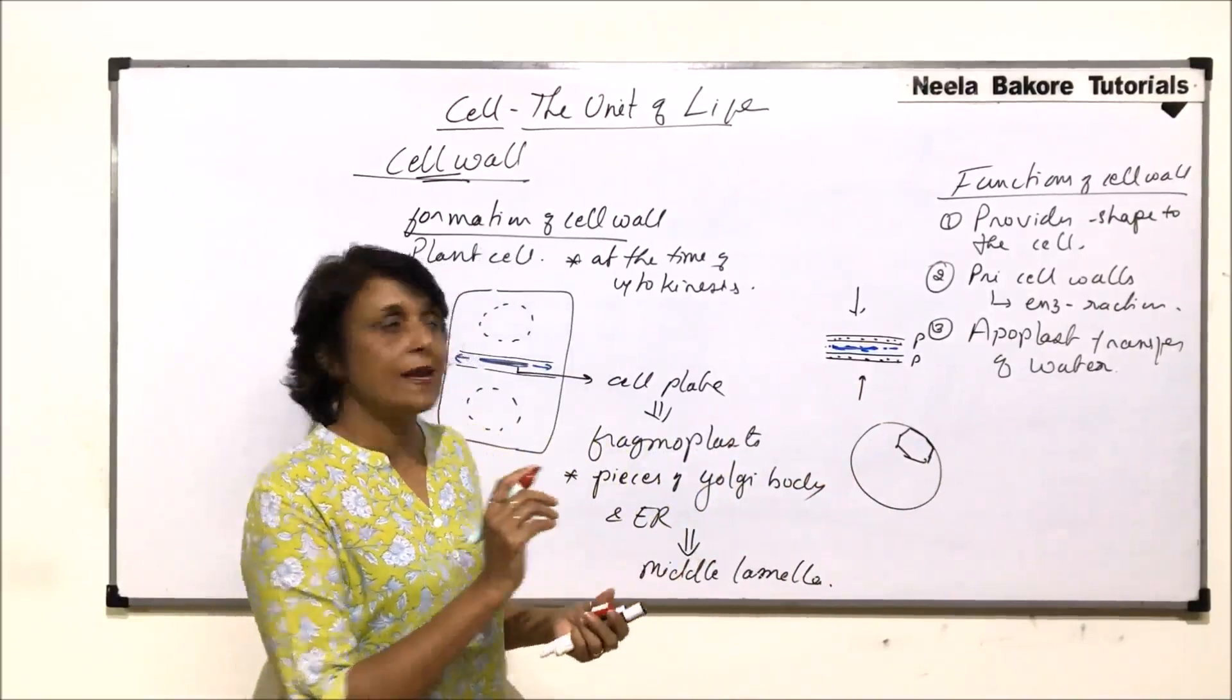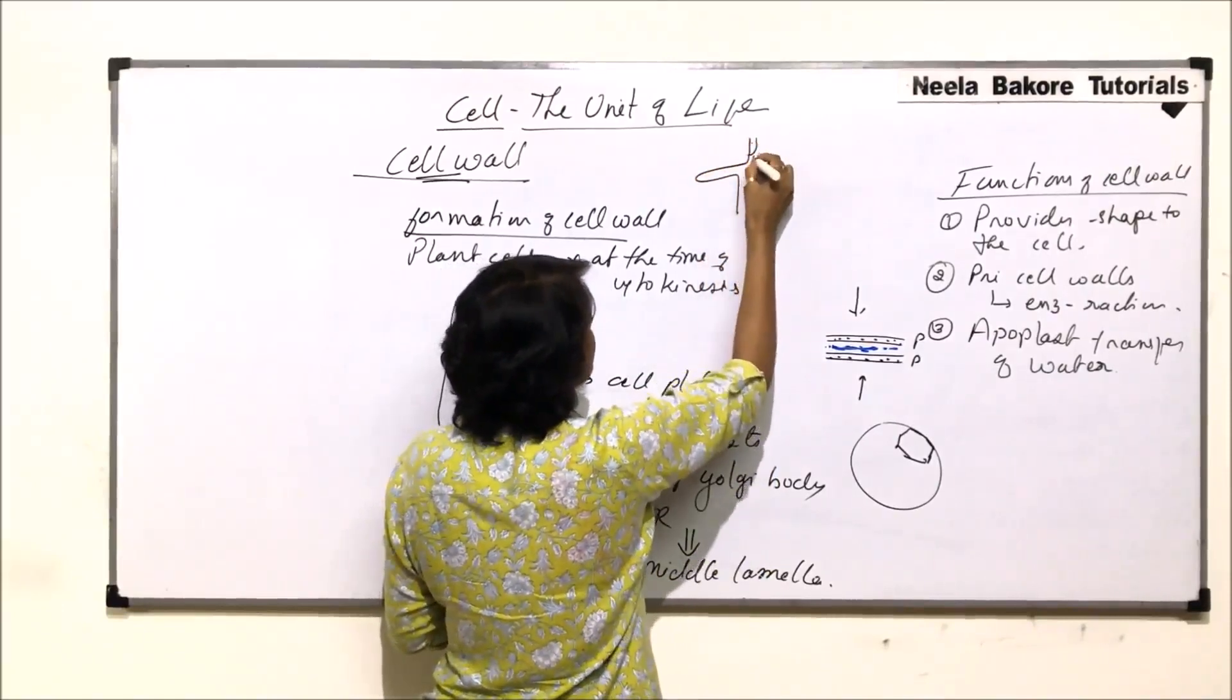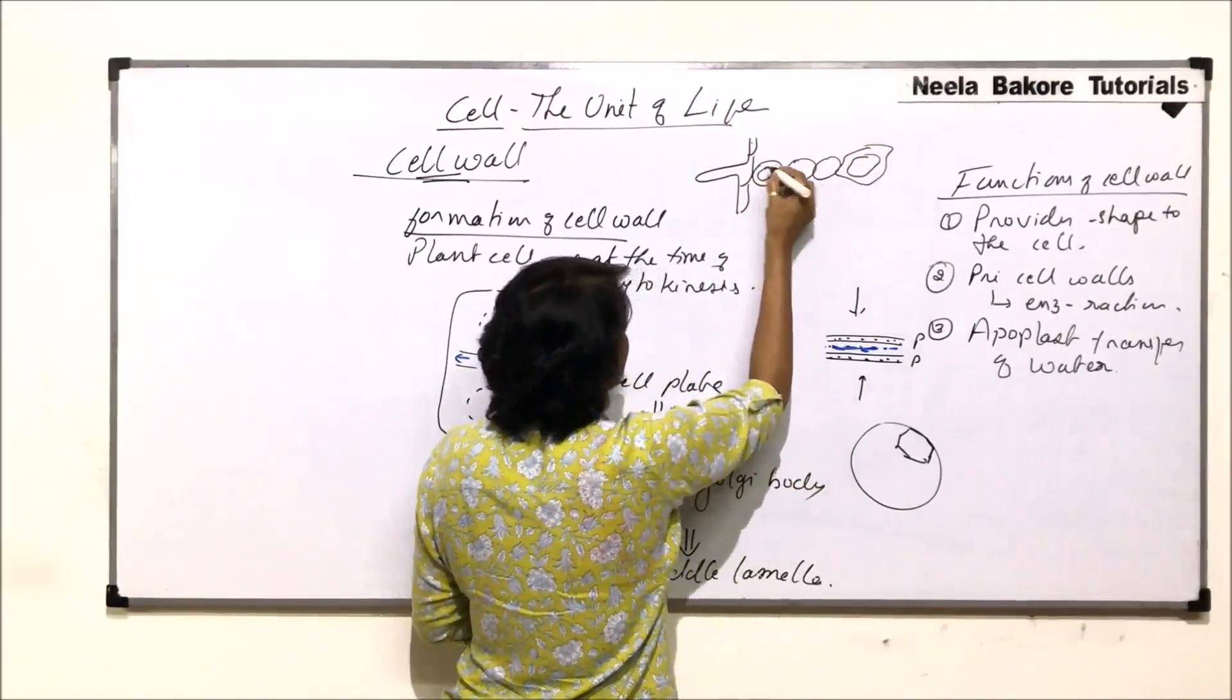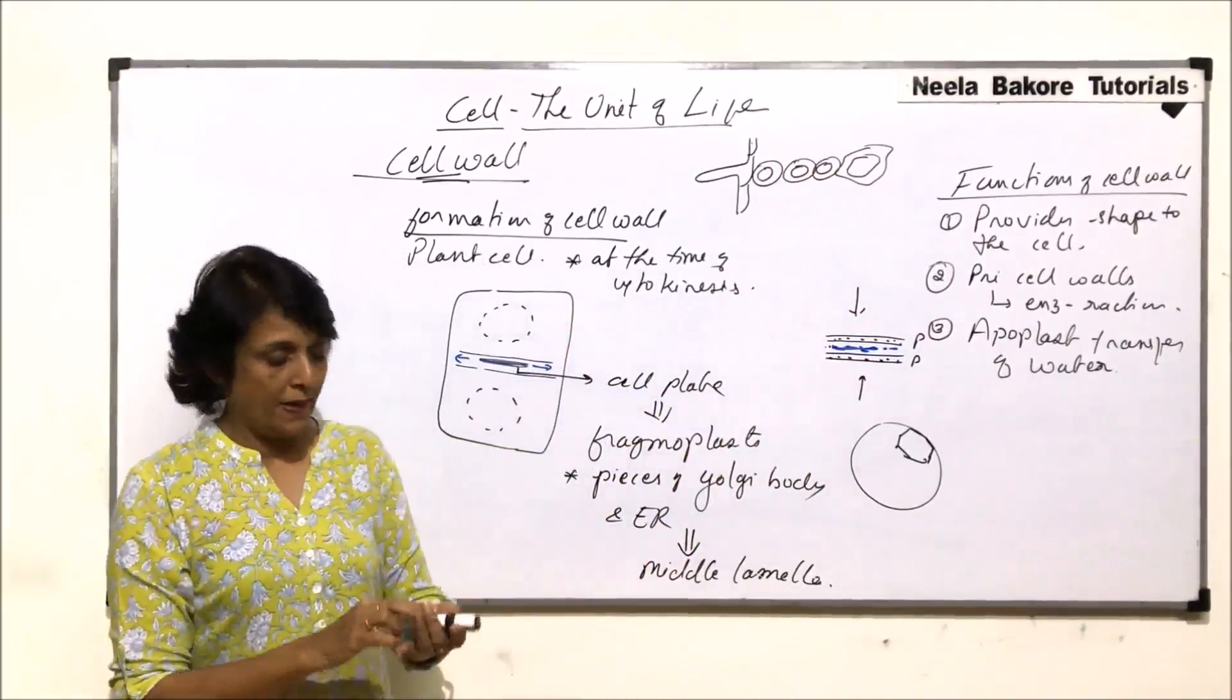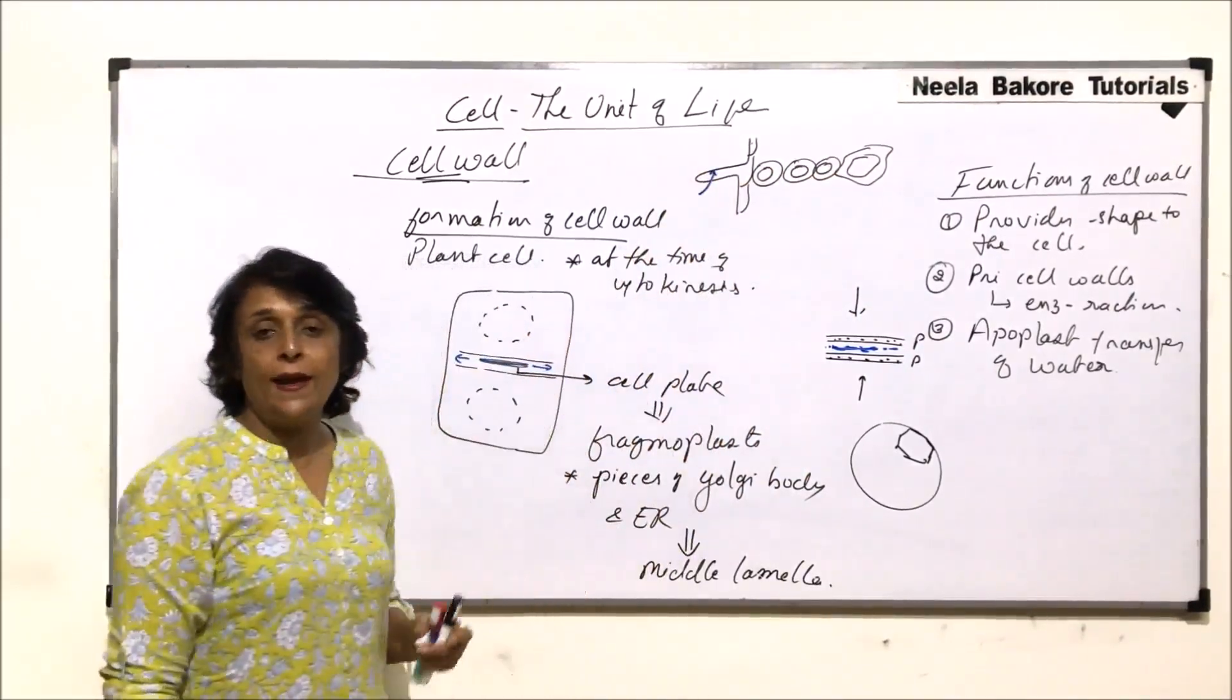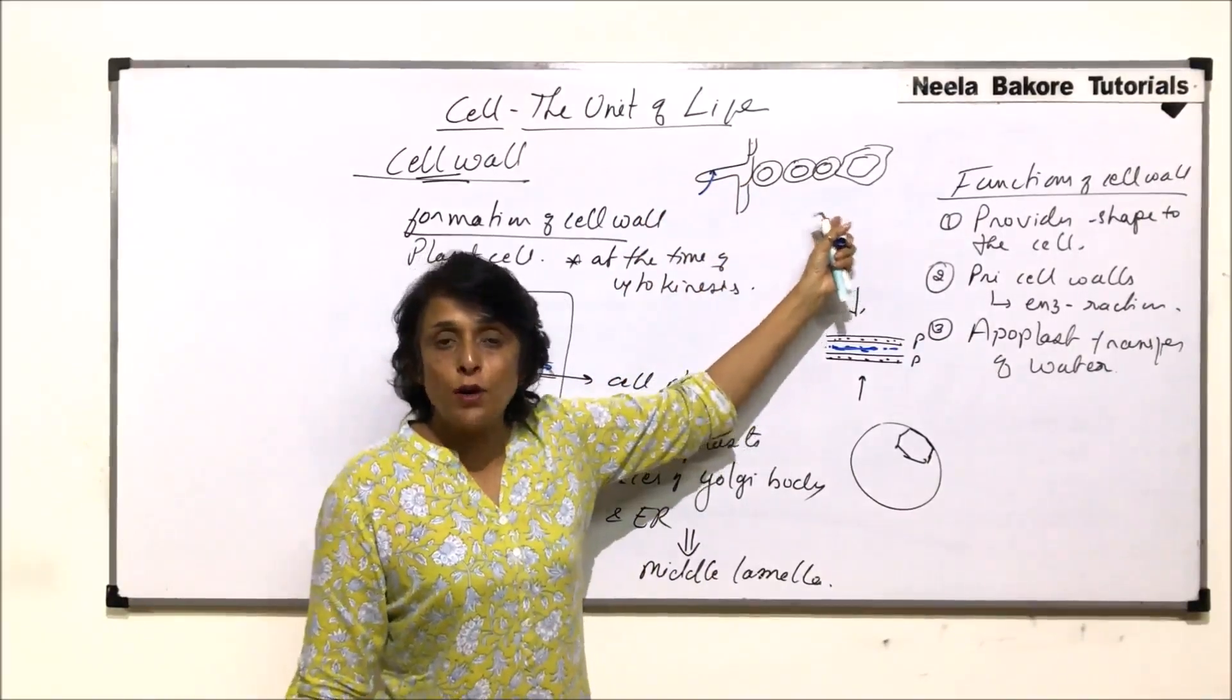Quickly we'll go over what exactly this apoplast thing means. I'm going to draw, say this is the root hair, this is the epidermis, and here are the cortical cells, and say this is the xylem. We are drawing these cortical cells thick because we want to show the cell wall. When water is to be taken in, the water comes into the root hair.